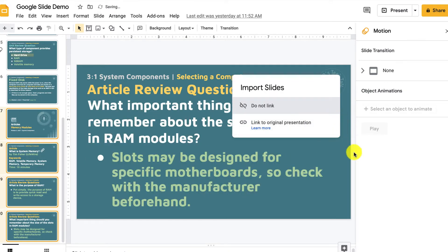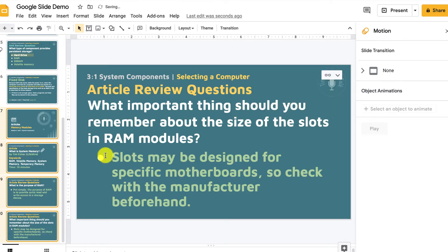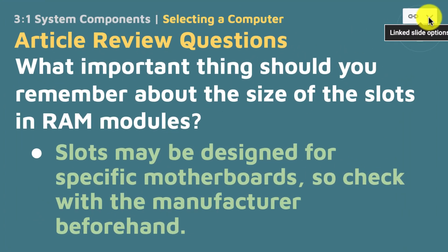When you paste them down below, you get an option. You can choose Do Not Link or Link to Presentation. I'm going to select Link to Original Presentation, and what that's going to do is leave a little link symbol at the top right.